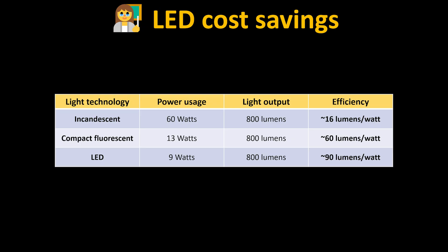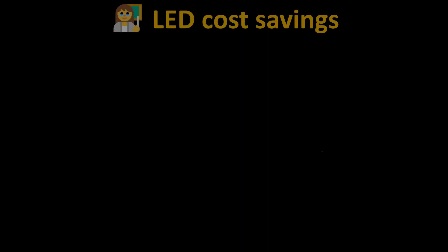How much money do LEDs actually save you? Let's compare. 60-watt incandescents put out about 800 lumens with an efficiency of about 16 lumens per watt. A 13-watt compact fluorescent puts out about 800 lumens as well with an efficiency of about 60 lumens per watt. And a 9-watt LED also puts out 800 lumens at about 90 lumens per watt.